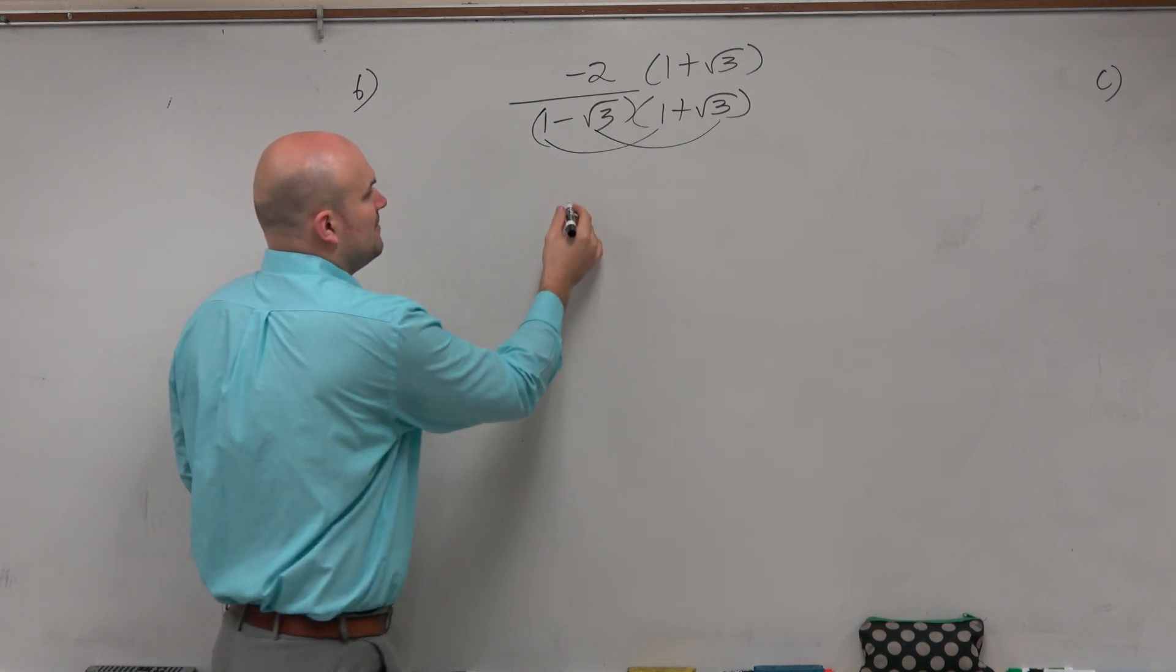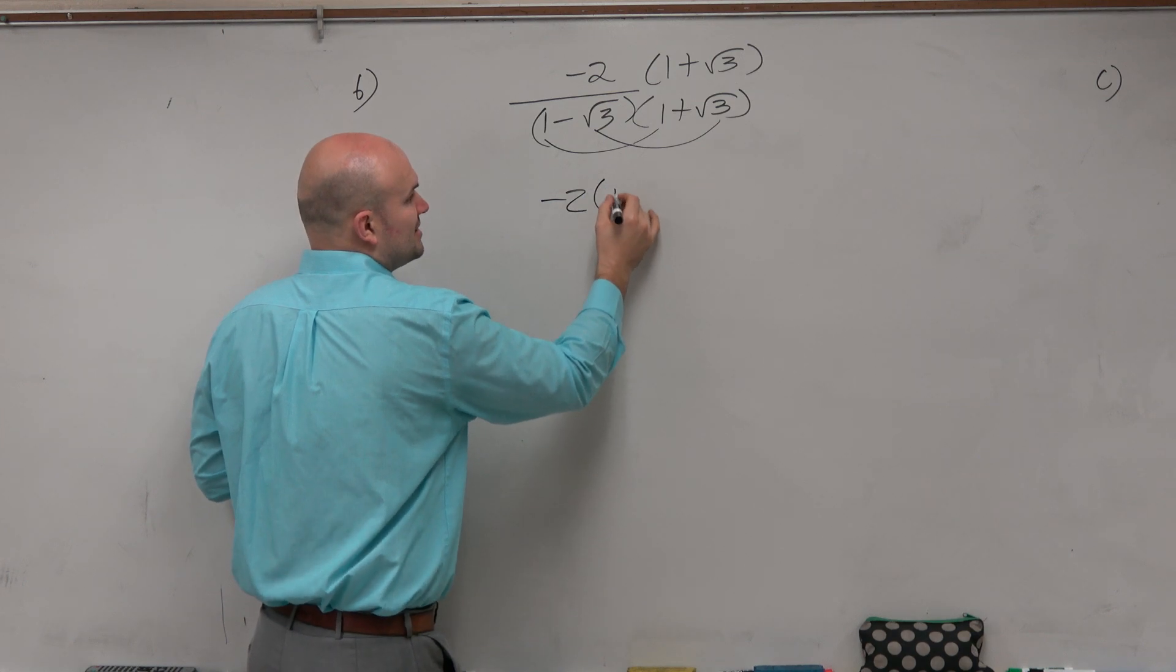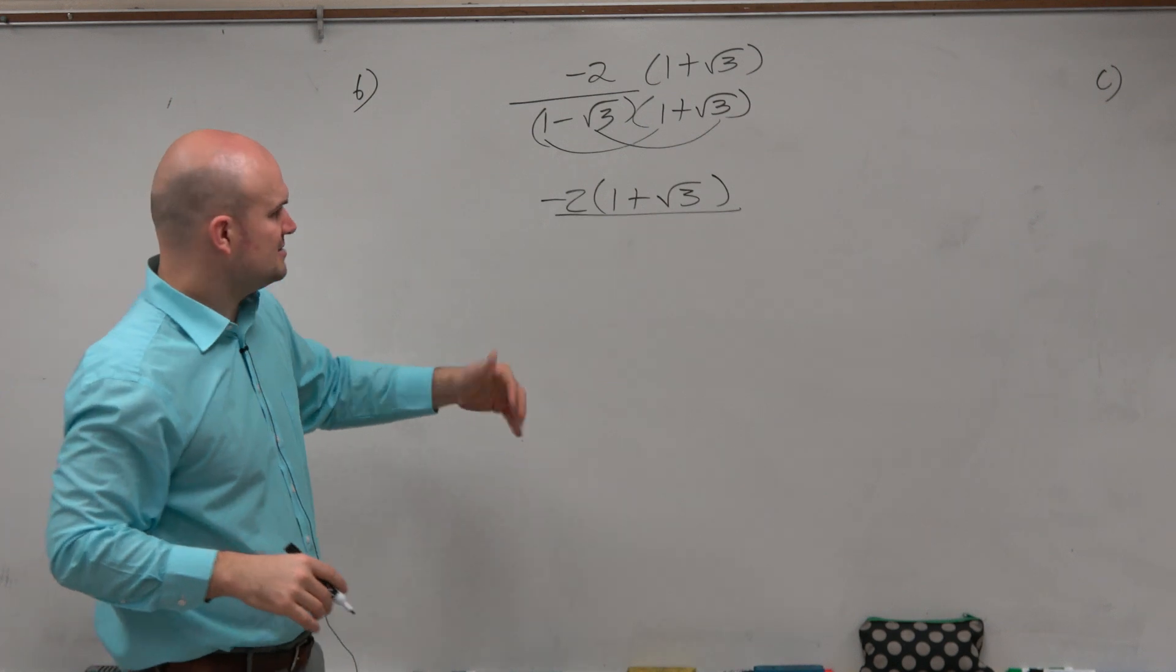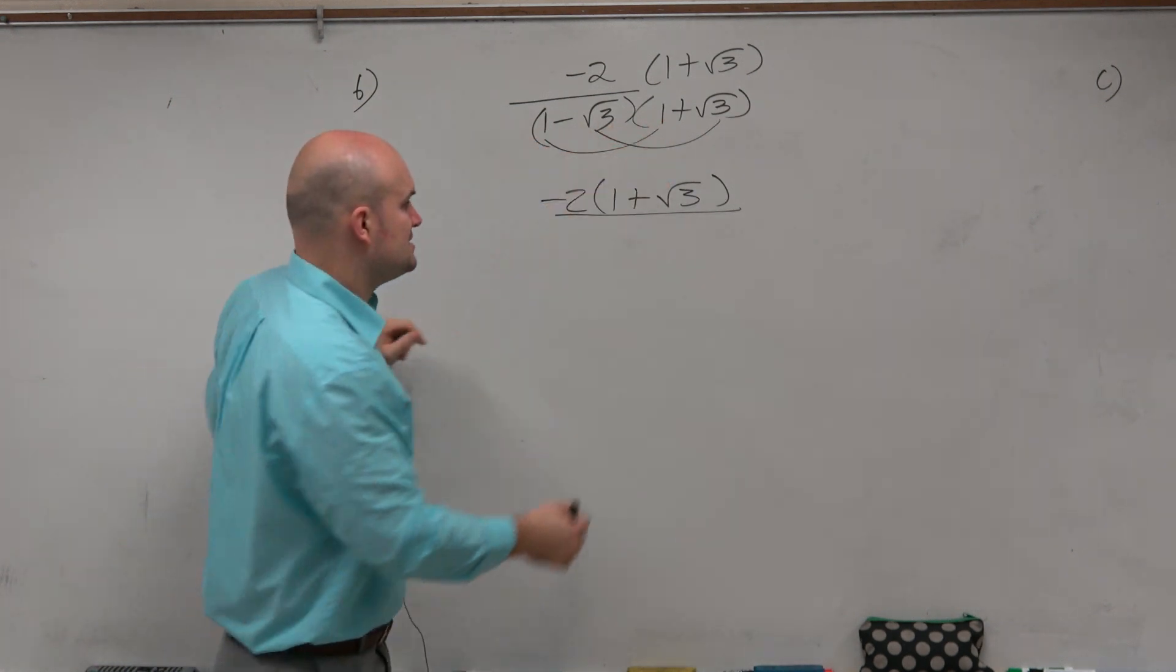So I'm not going to simplify the numerator because I'm thinking ahead, which I'll explain in just a second. So 1 times 1 is 1.